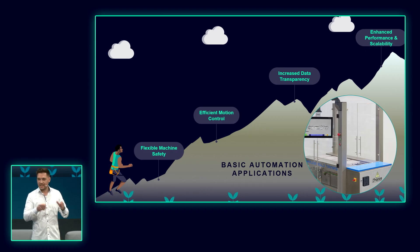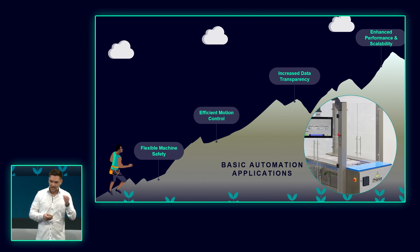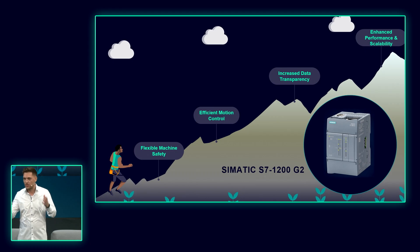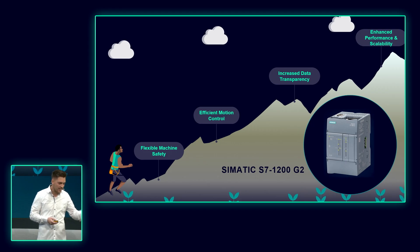Those are really the key factors when looking towards the future of basic automation. The automation technology you build into your machines should support those innovation fields in the best possible way. And what is at the heart of every machine? It's the controller, the PLC. We are proud to launch a new controller generation for basic automation here at the SPS Fair - our new SIMATIC S7-1200 G2. It is the successor of the well-established SIMATIC S7-1200, and it comes now with flexible machine safety, efficient motion control, increased data transparency, as well as enhanced performance and scalability.